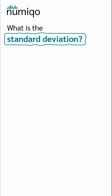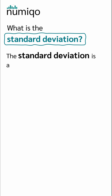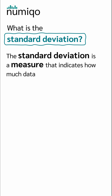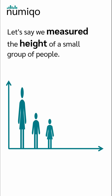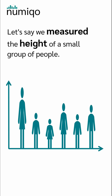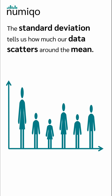What is the standard deviation? The standard deviation is a measure that indicates how much data scatter around the mean. Here is a simple example: let's say we measure the height of a small group of people. The standard deviation tells us how much our data scatter around the mean.